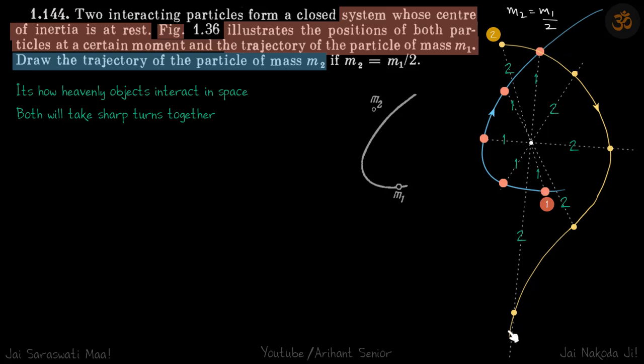Now you can also imagine that as they go further and further, m2 is going to travel double the distance of m1 because this ratio is always 1 is to 2. So if this goes by distance dx, this will go by distance 2dx. So that's another thing we can observe.